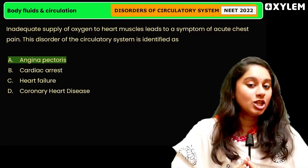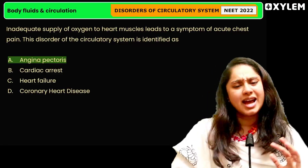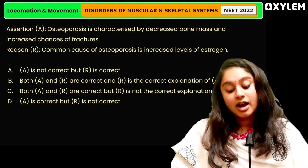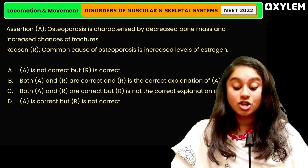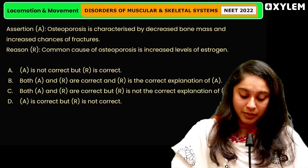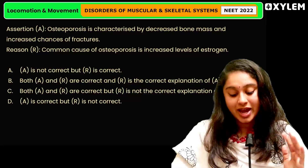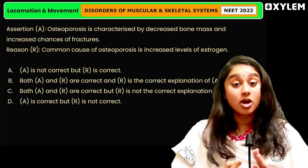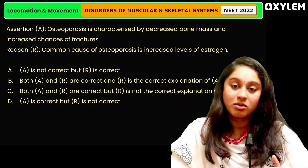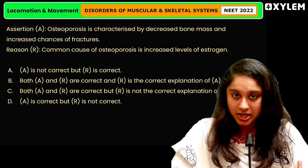I think this was a very direct question. Then, disorders of muscular and skeletal systems — one assertion-reason question. The assertion says that osteoporosis is characterized by a decrease in bone mass, and that's why fractures occur — good chances of fractures.